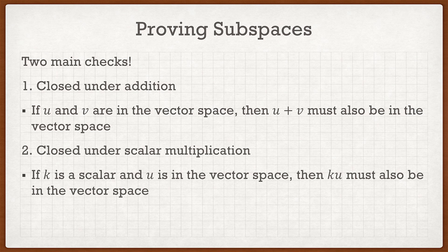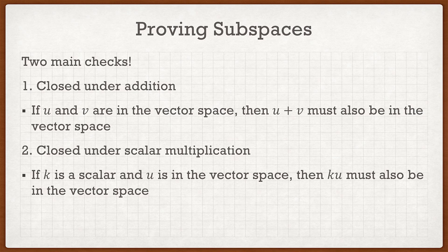The second check is that it must be closed under scalar multiplication. So if k is a scalar and u is a vector in the vector space, then ku must also be in the vector space.